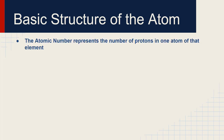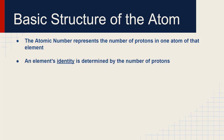We have a couple of terms to know. First, atomic number — the atomic number describes the number of protons in one atom of that element. Carbon has an atomic number of six; hydrogen has an atomic number of one. That means carbon has six protons in its nucleus and hydrogen has one. The identity of an element is determined by the number of protons. If you have an atom with one proton it is definitely hydrogen. If you have two protons, it's helium, and so on. The number of protons tells you which element you're talking about.